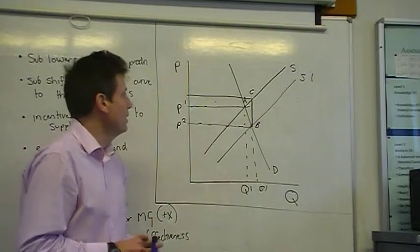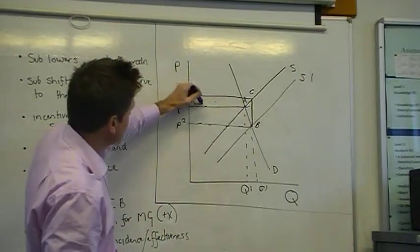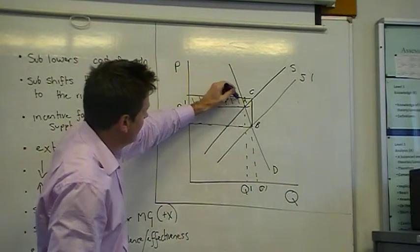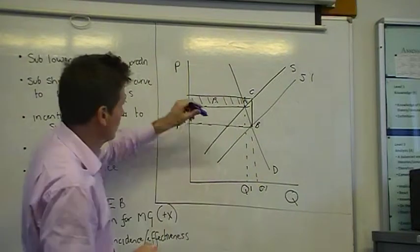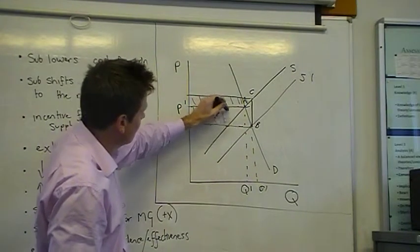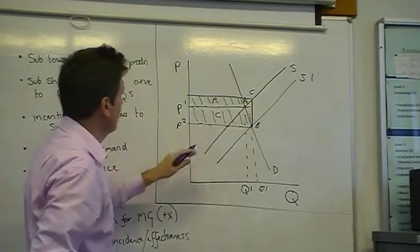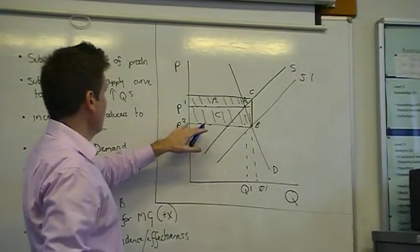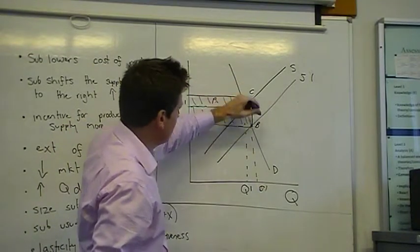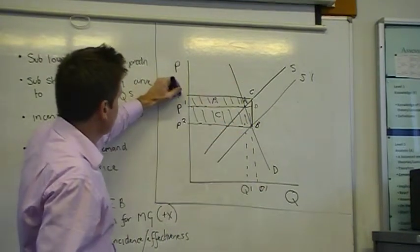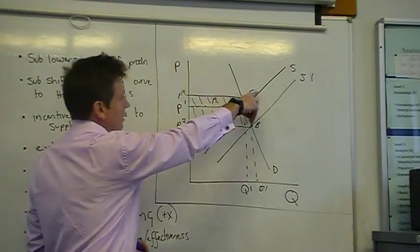As you can see here, this shows us who gets the subsidy. With a subsidy, the producer will get this amount and the consumer will get this amount. So the consumer will get area P2, P1 — let's call it DB. And the producer will get P1, P star, CD.